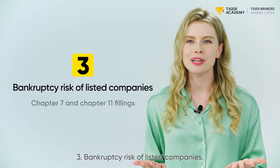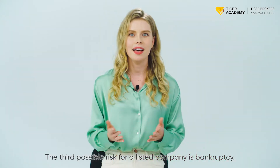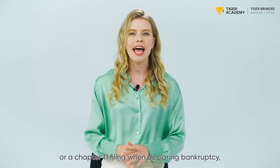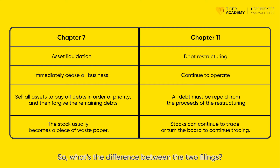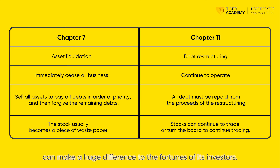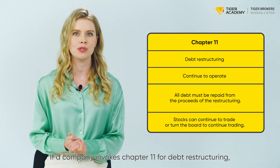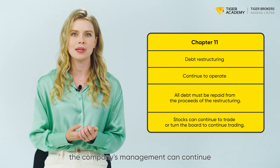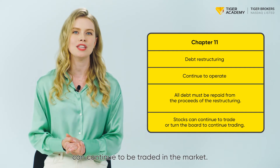Number three: bankruptcy risk of listed companies. The third possible risk for a listed company is bankruptcy. A company may choose a Chapter 7 or a Chapter 11 filing when declaring bankruptcy, as provided for in the U.S. Bankruptcy Code. Which chapter a company chooses to file under can make a huge difference to the fortunes of its investors. If a company invokes Chapter 11 for a debt restructuring, the bankrupt company can continue to operate as usual, the company's management can continue to be responsible for its daily business, and its stocks and bonds can continue to be traded in the market.